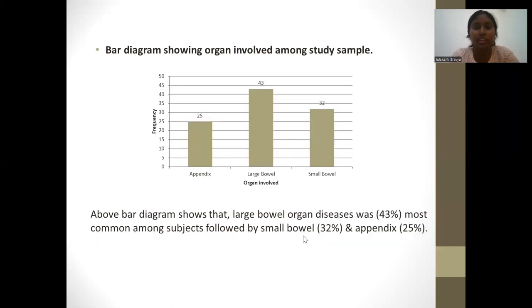This bar diagram shows the organ involved among the study sample, indicating that the large bowel was majorly involved at 43%, followed by the small bowel and appendix.